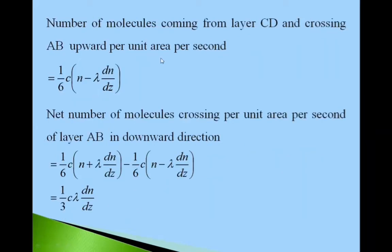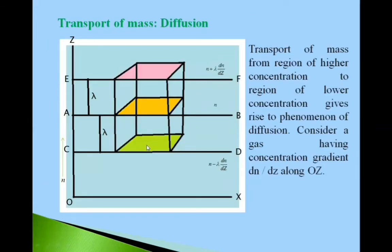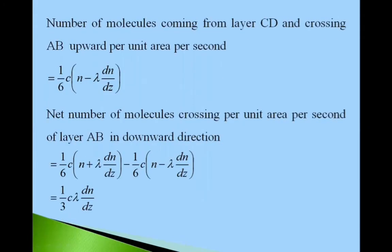This is the number of molecules coming from layer CD and crossing AB upward per unit area per second. The number of molecules from CD layer crossing AB in upward direction per unit area per second is given by 1 upon 6 into C into N minus lambda dN by dz. Now we have to calculate net number of molecules crossing per unit area per second of layer AB in downward direction.